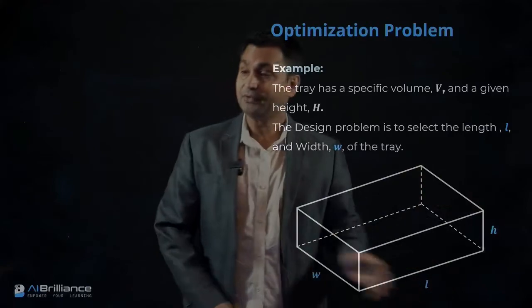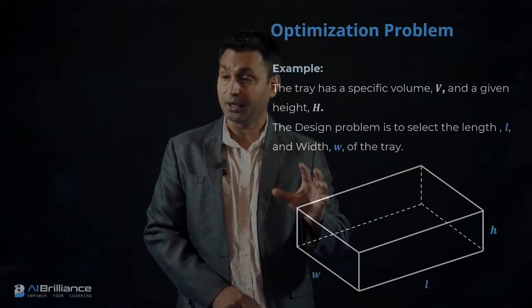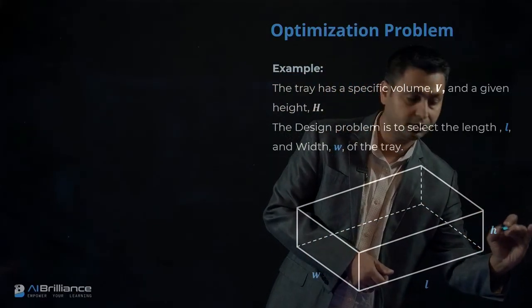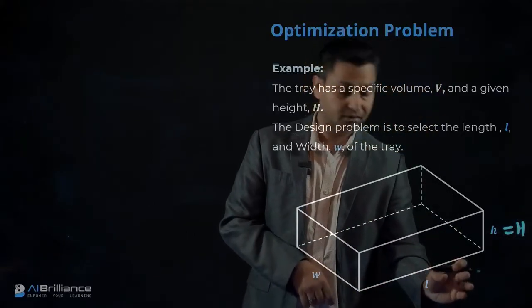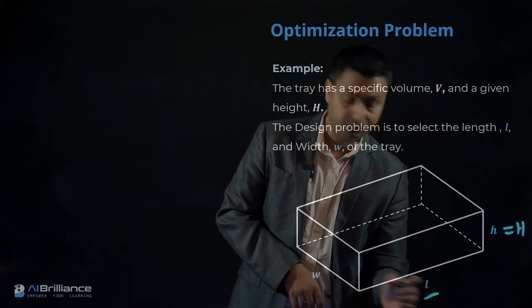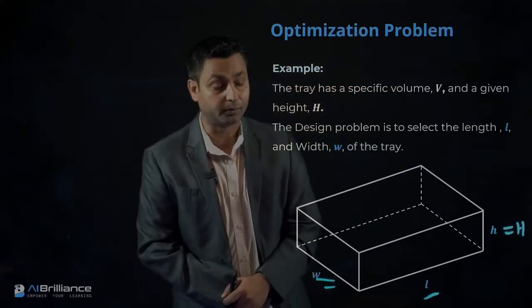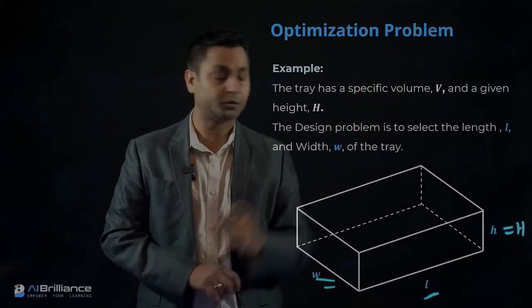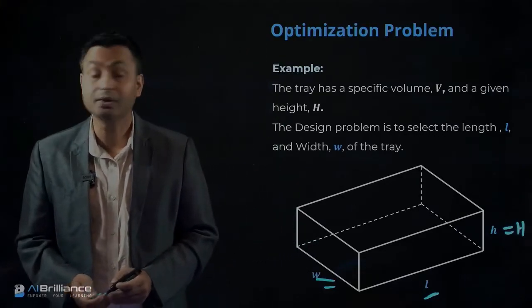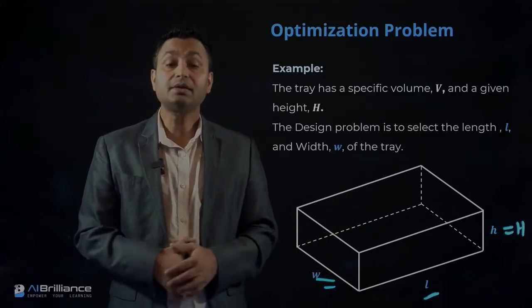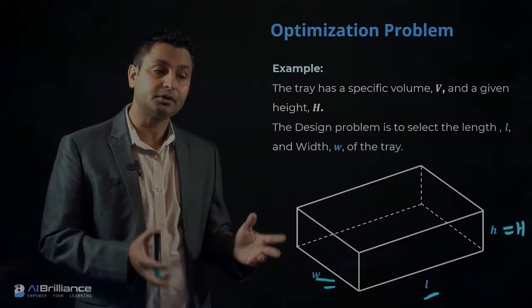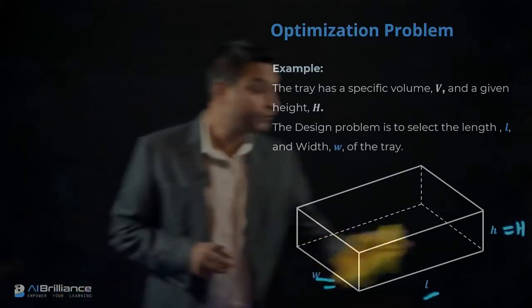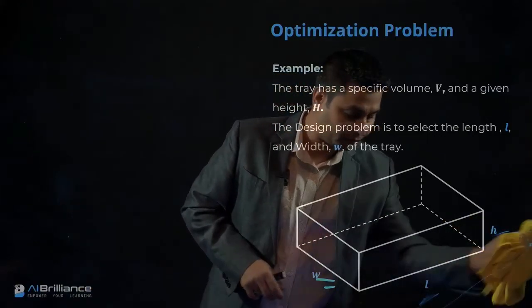In the illustrative figure, the height H is fixed, but there are two variables: the length L and the width W. These two variables can be freely chosen, as long as their values result in the specified volume. The question is how to design this drawer, so let's formulate this as a mathematical problem.